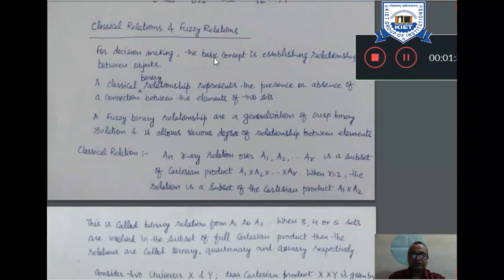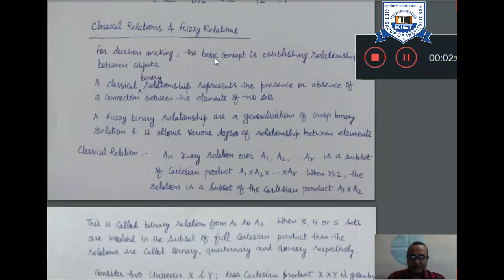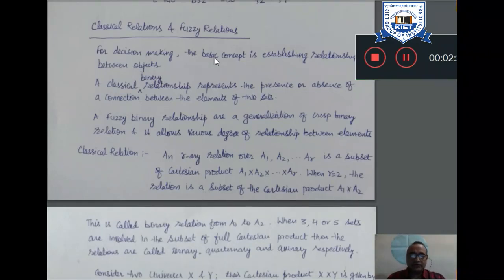Now I am giving you a glimpse of classical relations. Suppose we are having one classical set and we want to establish its relationship with another classical set. That relationship is an ordered pair of elements from the first set to the other set. The first set is available in the first universe of discourse and the other set is available in another universe of discourse. We are simply making a relationship among two different universal sets.